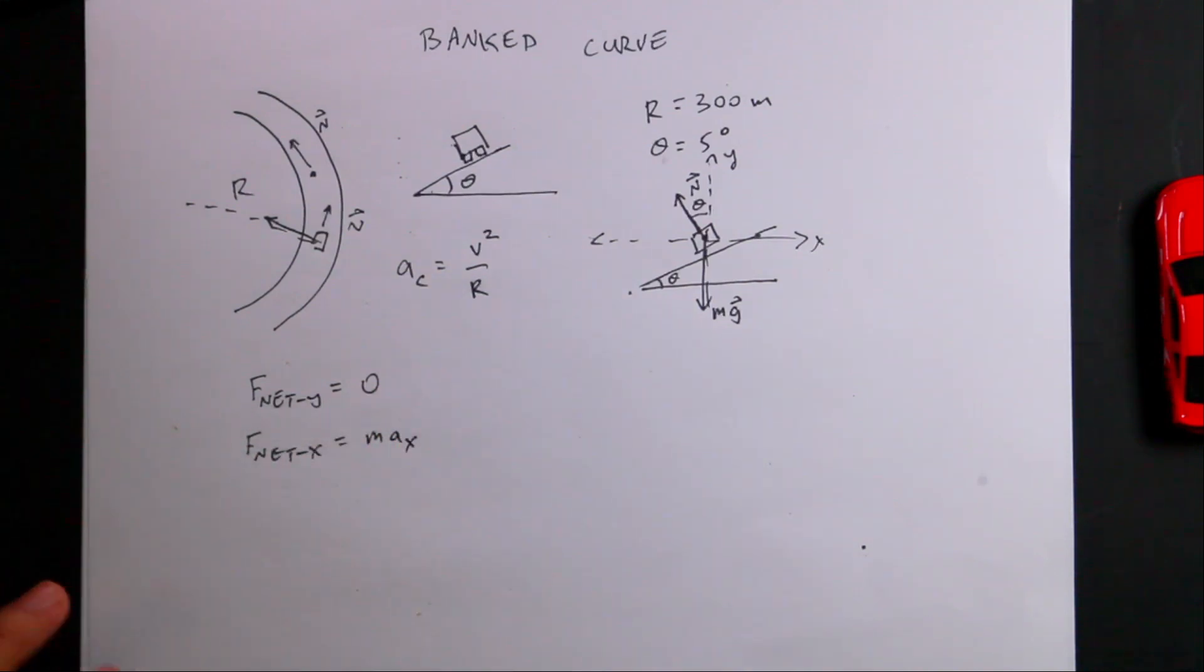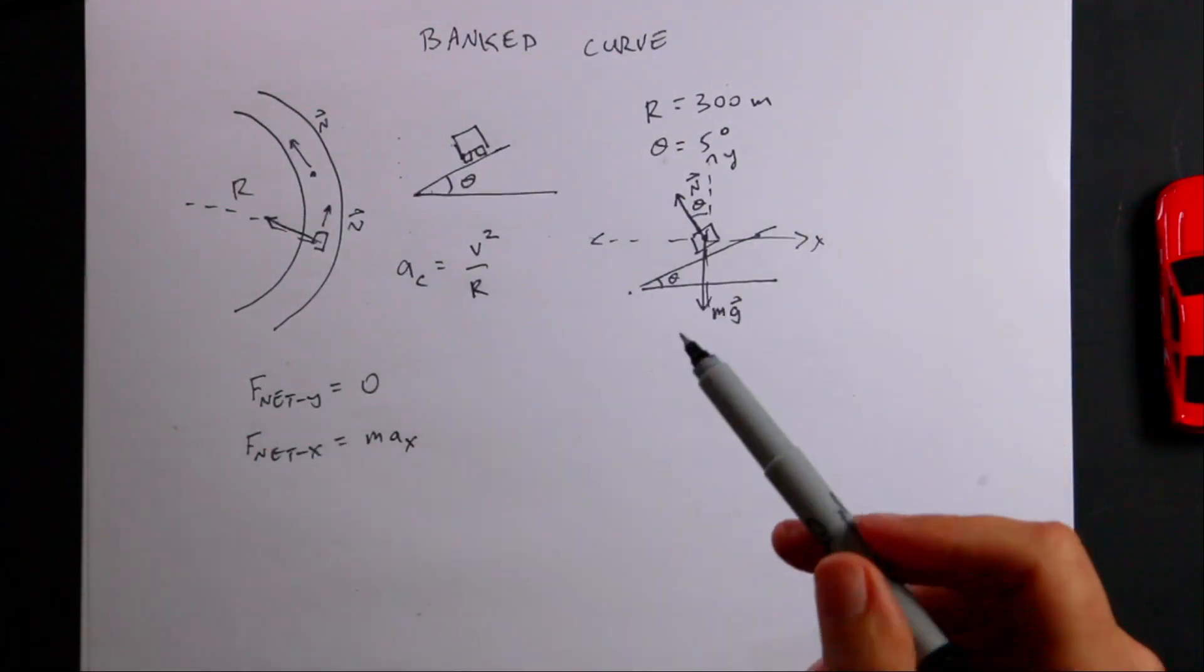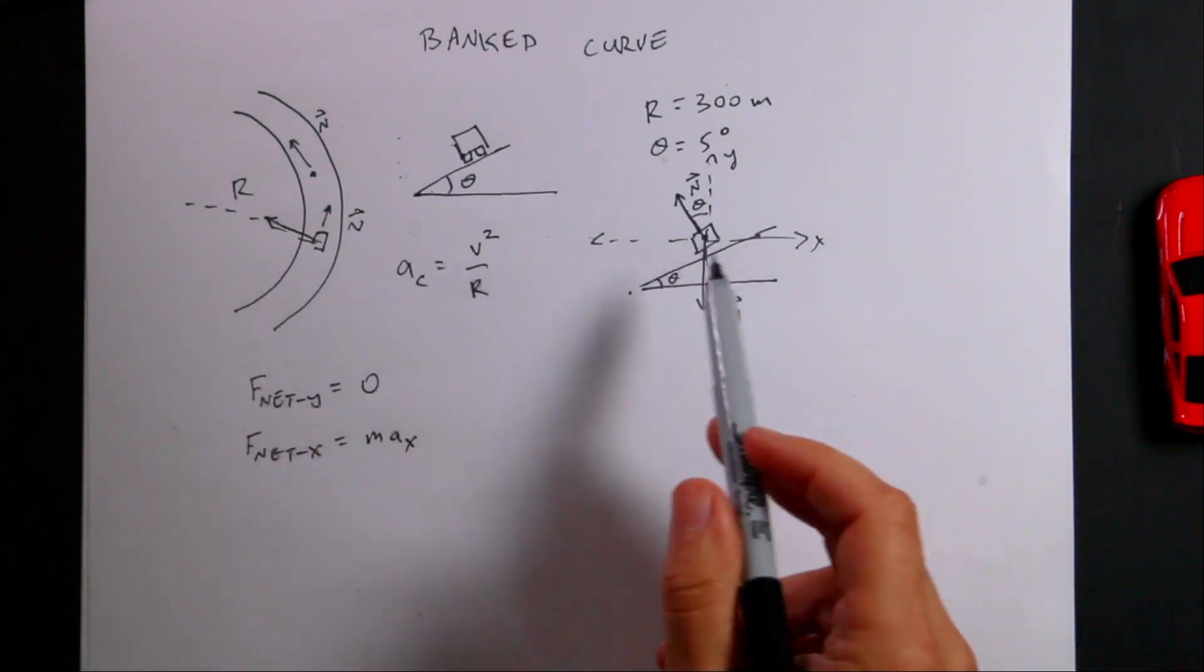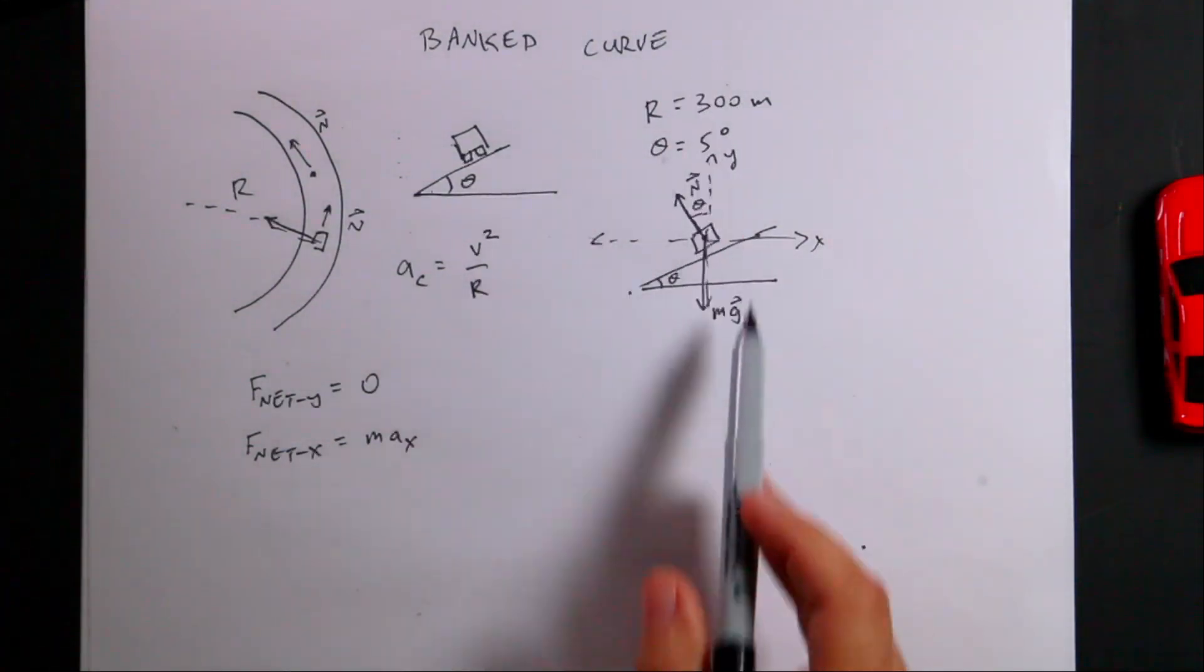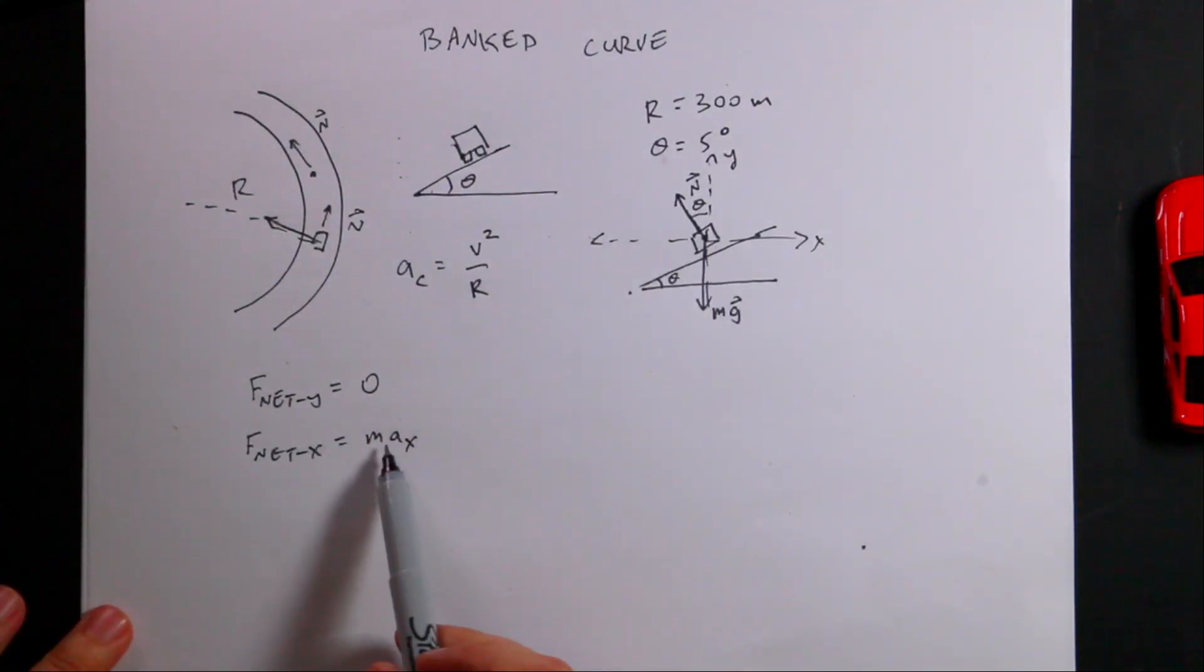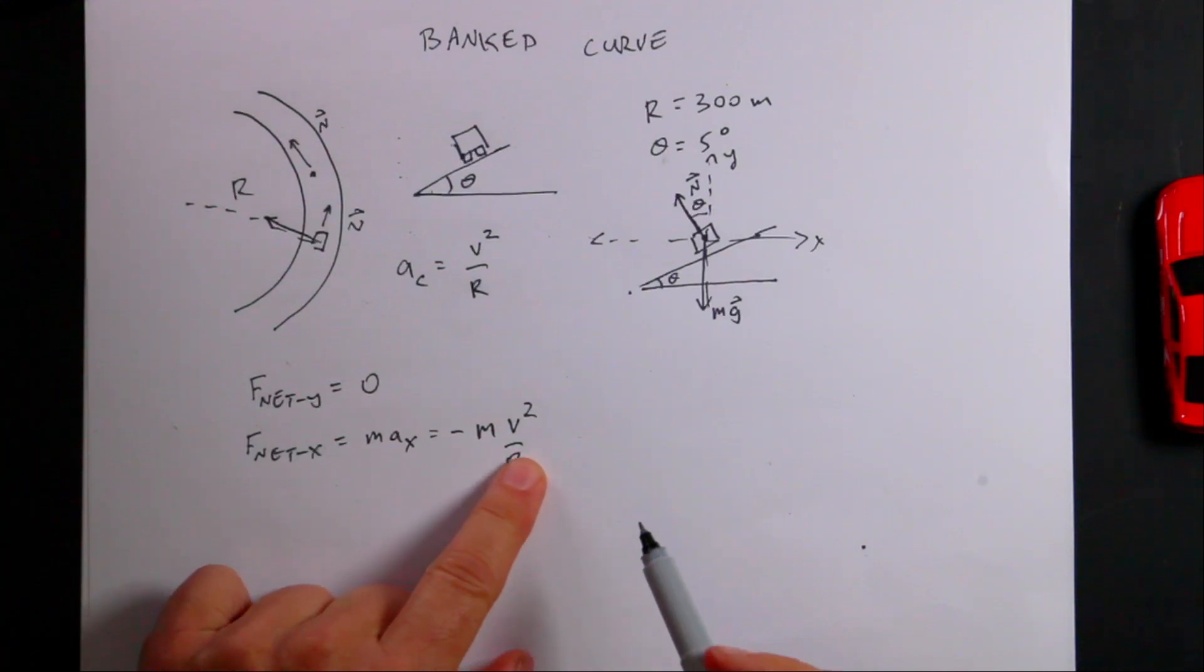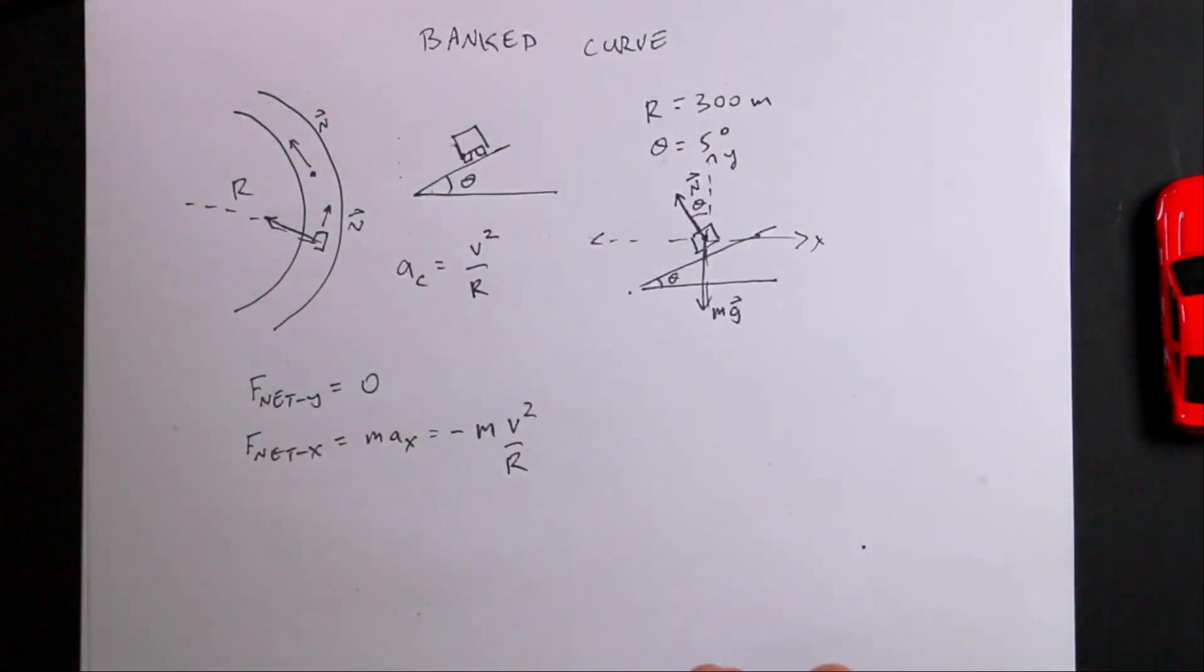In this case I'm calling this my y direction. Don't call up and down the plane your axis. You want to pick your x or y axis such that the direction of the acceleration is in one of those directions, and in this case it's in the x direction. It's not moving up or down the track, it's not accelerating this way, so the forces in the y direction have to be zero. The forces in the x direction would be the acceleration. In this case, that would be negative m v squared over r. It's the mass times the acceleration v squared over r because it's moving in a circle. It's negative because I just happen to pick that to be the negative x direction.